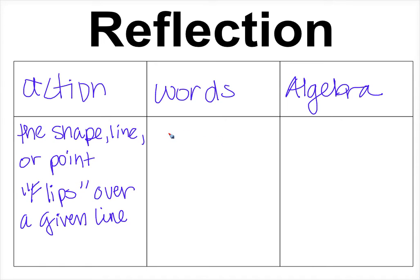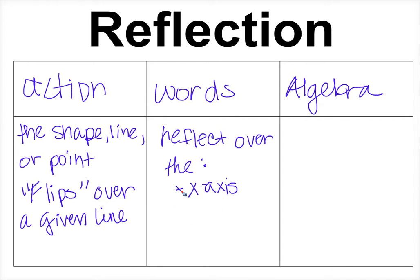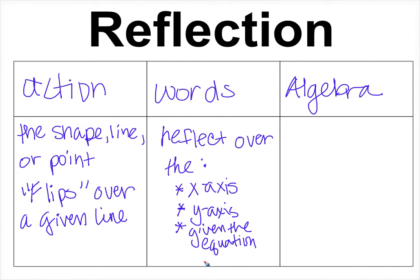For Words, the directions you'll see will say 'reflect over the x-axis,' or 'reflect over the y-axis,' or you might be given the equation of a line. Usually it's either the x-axis or the y-axis. Now for the Algebra section, we're going to come back to that because there's something I want you to see first.